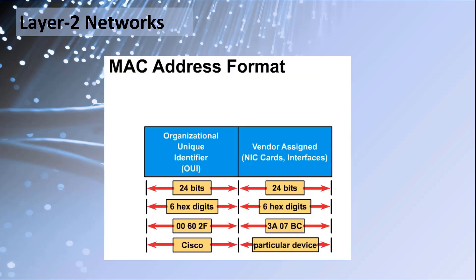MAC addressing is part of the data link layer and is also called physical addressing. A MAC address is 48 bits in length, or 12 hexadecimal digits. The first 24 bits are reserved for the manufacturer or vendor who makes the network interface cards.